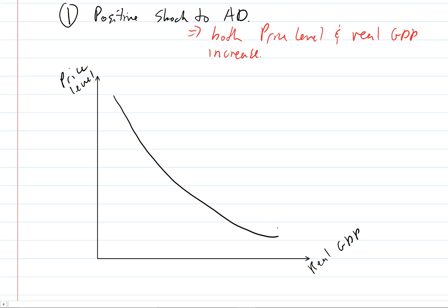We have an aggregate demand curve, downward sloping aggregate demand curve, an upward sloping with an increasing slope aggregate supply curve. Where they meet is going to determine equilibrium in terms of price level, P0, and in terms of real GDP, which we'll put Y0.